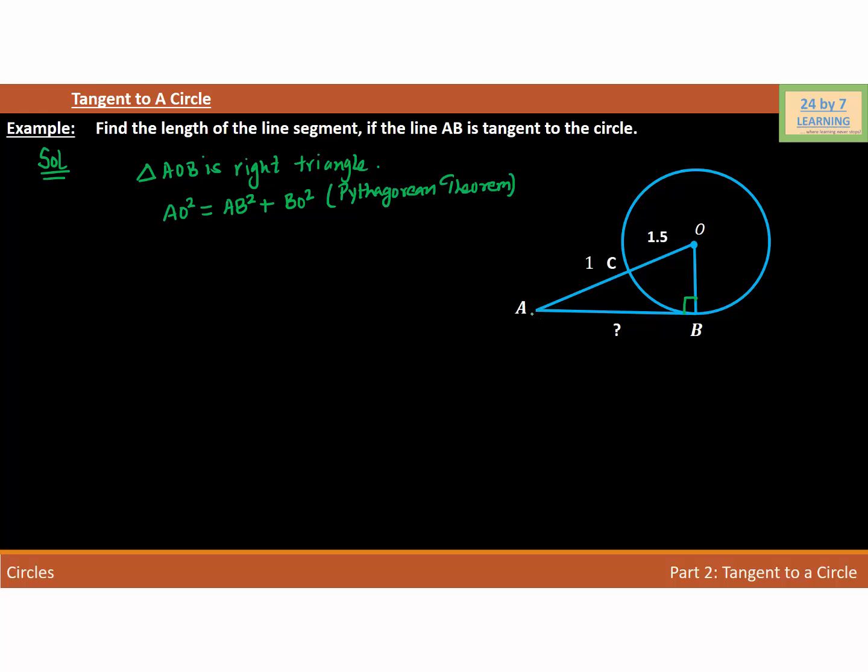If you look closely, you can see that AB is not given. So basically, we need to find the value of AB. OC is given as 1.5 and OC is the radius. So OB will also be 1.5 because OB is also the radius.